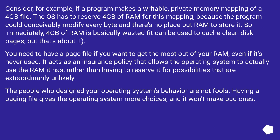Consider, for example, if a program makes a writable private memory mapping of a 4 GB file. The OS has to reserve 4 GB of RAM for this mapping, because the program could conceivably modify every byte and there's no place but RAM to store it. So immediately, 4 GB of RAM is basically wasted — it can be used to cache clean disk pages, but that's about it. You need to have a page file if you want to get the most out of your RAM, even if it's never used.